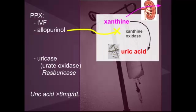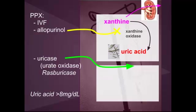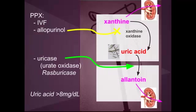Lastly, we have uricase, also known as rasburicase. Uricase is an enzyme that humans lack that converts uric acid to allantoin. If you give patients this, you're decreasing the amount of uric acid that can precipitate and cause renal failure, converting it to allantoin, which is also easily excreted renally. Generally, if uric acid is seen to be greater than 8 — either before or after treatment with chemotherapy — you can consider giving allopurinol or rasburicase.